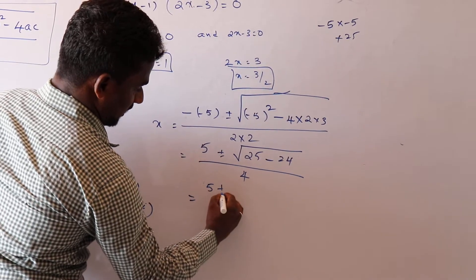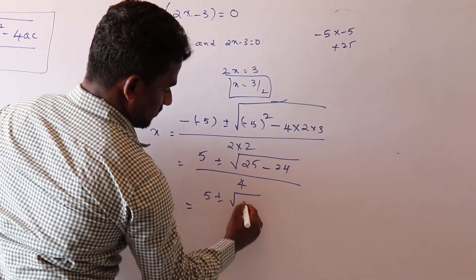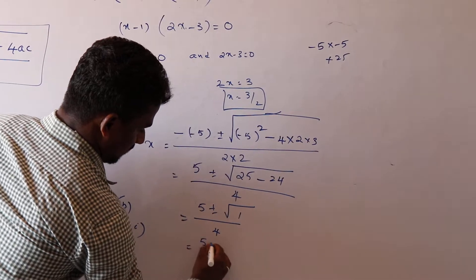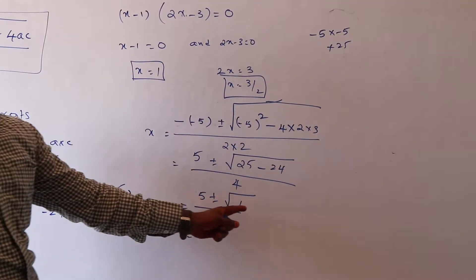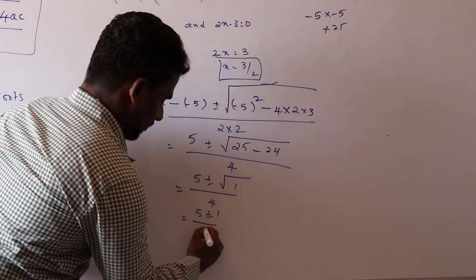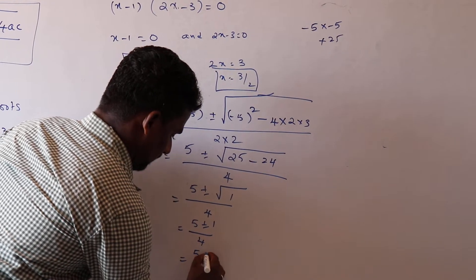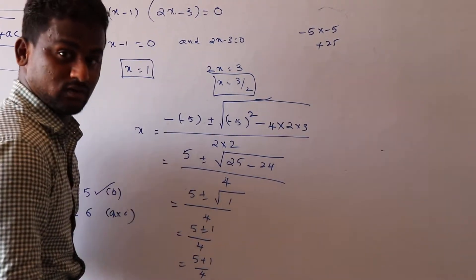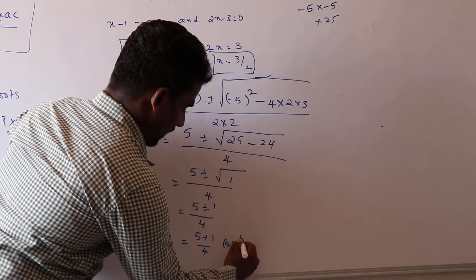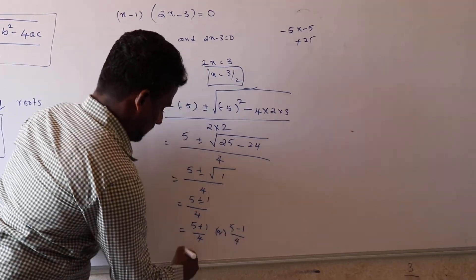That is 5 plus or minus, 25 minus 1, 1 by 4. That is 5 plus or minus root 1 value 1 by 4, so means 5 plus 1 by 4, 1 value 4, or 5 minus 1 by 4 value. 5 plus 1.